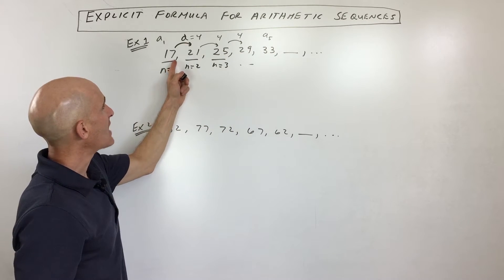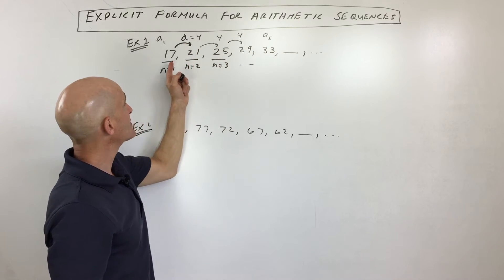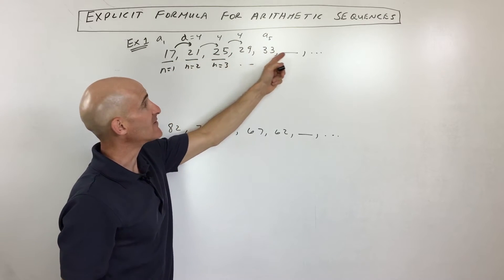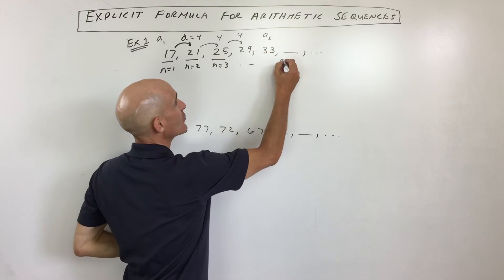So now what we want to talk about is how do we find out what the term is right here? Well, notice this is the 1, 2, 3, 4, 5, 6th term. So I'm just going to write n equals 6.